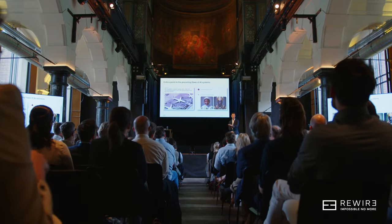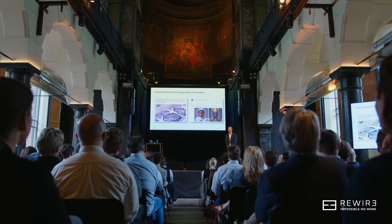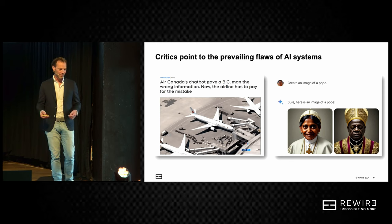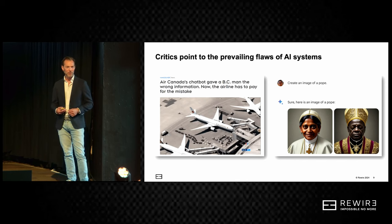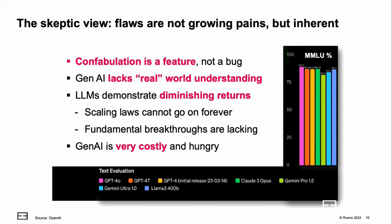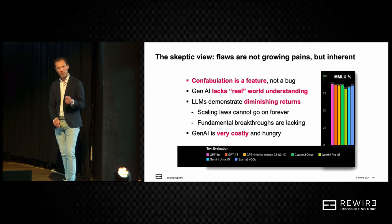There are incentives for the industry to make the world believe we're close to artificial general intelligence, so we can't fully trust them in my opinion. We have to keep looking at the data — and the data tells us we're still advancing. But current systems are anything but perfect. One example: Air Canada deployed a chatbot for customer service, and the chatbot gave away a free flight. Even when they went to court to reclaim it, the customer won.